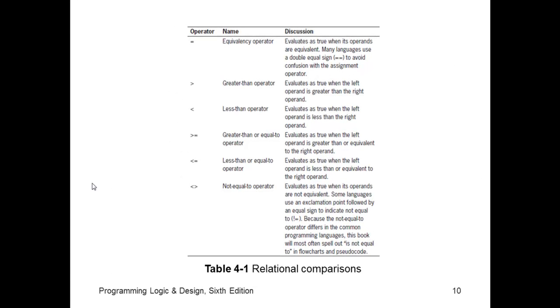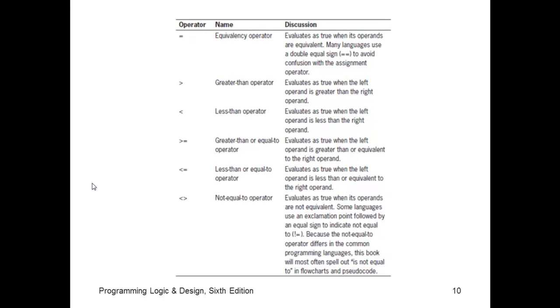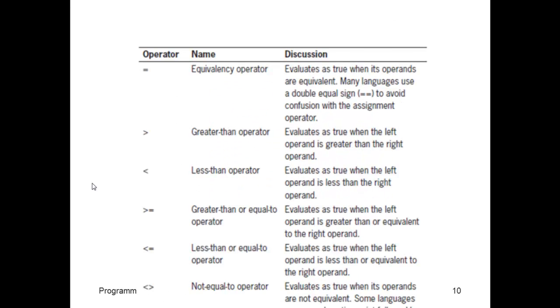Here are the six relational operators that are commonly accepted. The equivalency operator or the equal to, greater than, less than, greater than or equal to, less than or equal to, and the not equal to. Now, once again, I'm going to say that depending on your language, when you actually write the code, these symbols may be slightly different depending on the language.